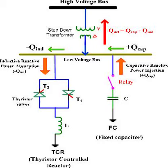An SVC operates by dynamically adjusting its reactive power output to either absorb or generate reactive power. Reactive power is essential for maintaining voltage stability in power systems but does not perform any useful work. The SVC uses thyristor-controlled reactors and thyristor-switched capacitors to achieve this control. By regulating reactive power, an SVC can help balance the system voltage, mitigate voltage fluctuations, and enhance power transmission efficiency.